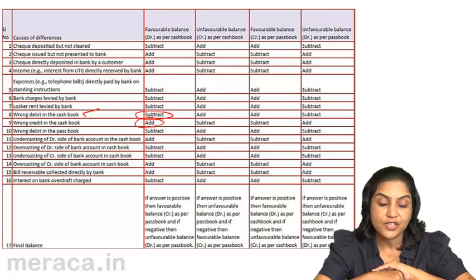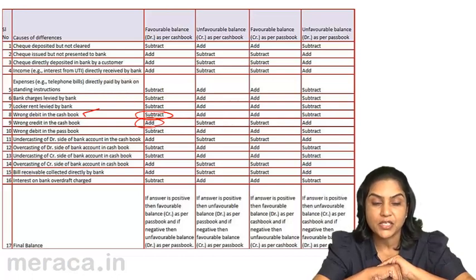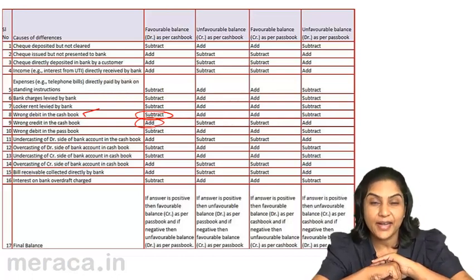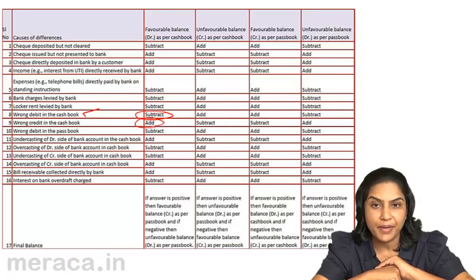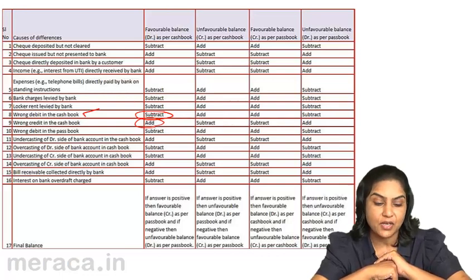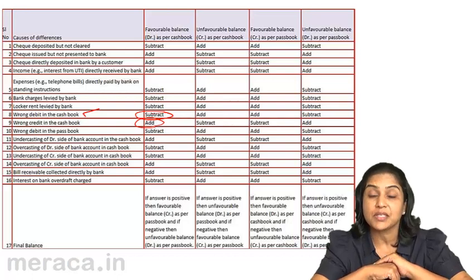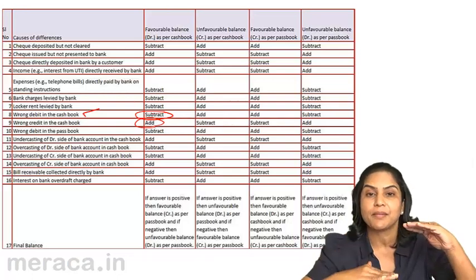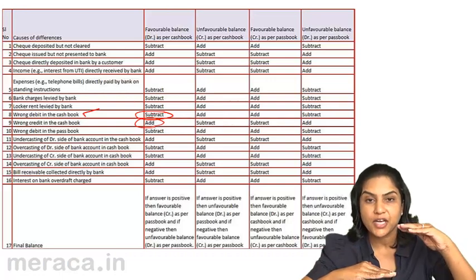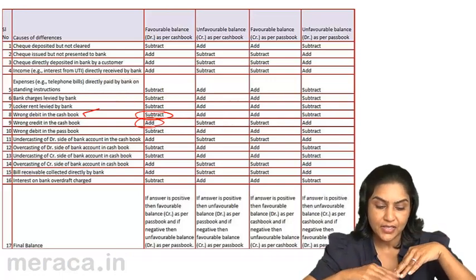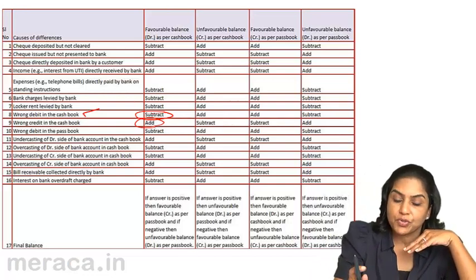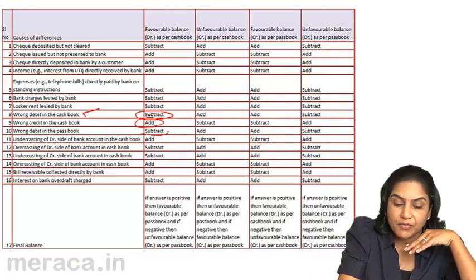What happens in case there is a wrong debit in the passbook? Mind you, a debit in the passbook indicates withdrawals. So, if there is a wrong debit in the passbook, it means there is more withdrawal and the balance has come down. If you start from the cashbook, we would deduct.